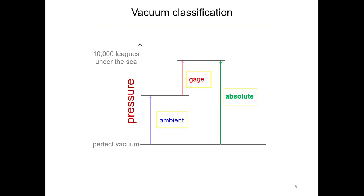We already saw this slide about different types of pressure. Remember gauge pressure is the difference between ambient and whatever pressure we're interested in; absolute pressure is the difference between that pressure and perfect vacuum. Anything less than atmospheric is what we would consider a vacuum — everything in that range is a vacuum.